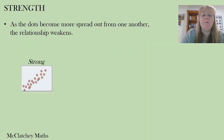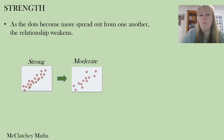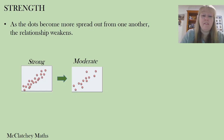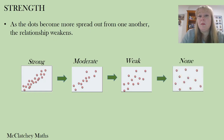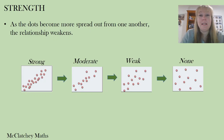A moderate relationship shows dots more spread out — we could still fit a line of best fit through the middle, but those dots are a lot further apart. As they get further and further apart the relationship weakens further, until we get situations where there's absolutely no correlation at all, and it would be very difficult to work out where to place a line of best fit.